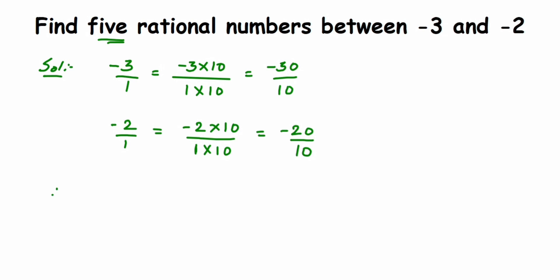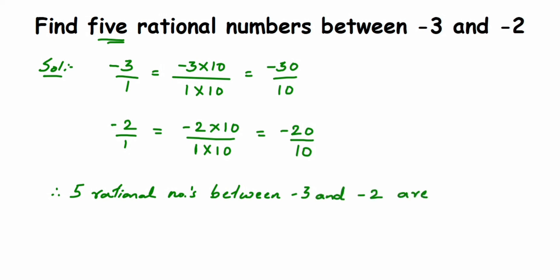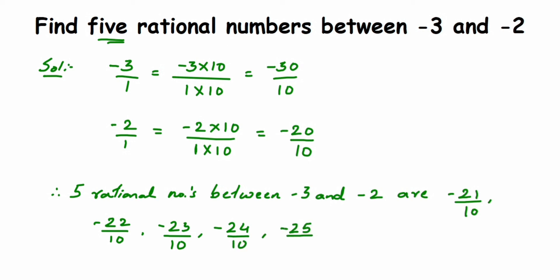Therefore, five rational numbers between minus 3 and minus 2 are: minus 21 over 10, minus 22 over 10, minus 23 over 10, minus 24 over 10, and minus 25 over 10. Do not include minus 20 over 10 or minus 30 over 10, as we need numbers strictly between them. You could also write minus 26, 27, 28, or 29 over 10 — any five from that range are acceptable.